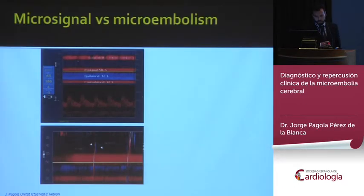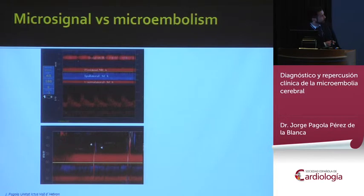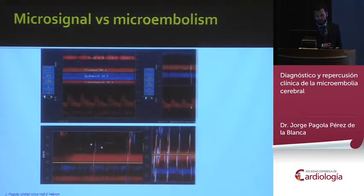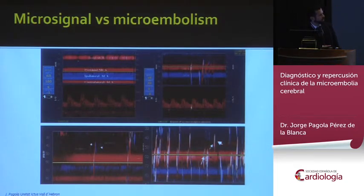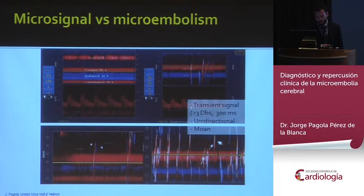This is a simple B-mode spectral display. You can see the flow of the MCA and ACA arteries. This is a unique, isolated microembolism — pretty easy to diagnose. But sometimes we have this kind of spectrum where there are several microsignals but only one microembolism, and it is not that easy to diagnose.